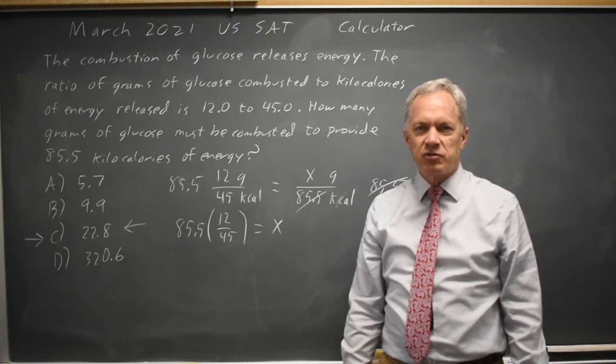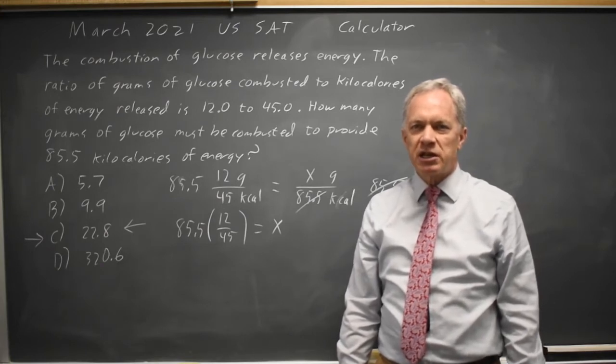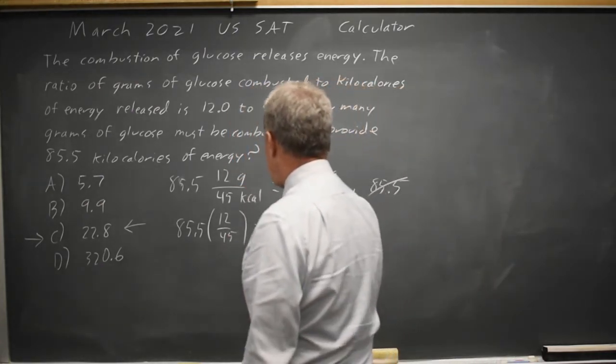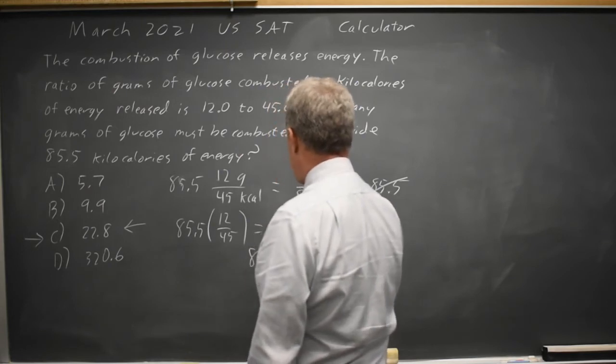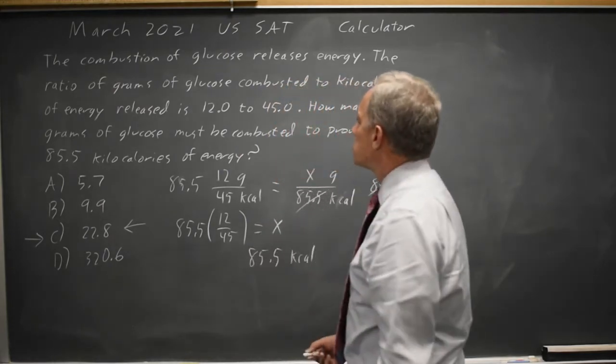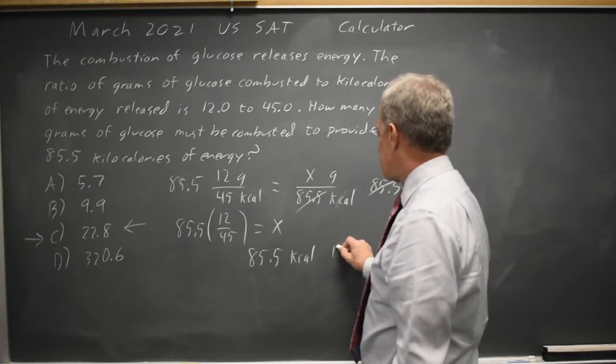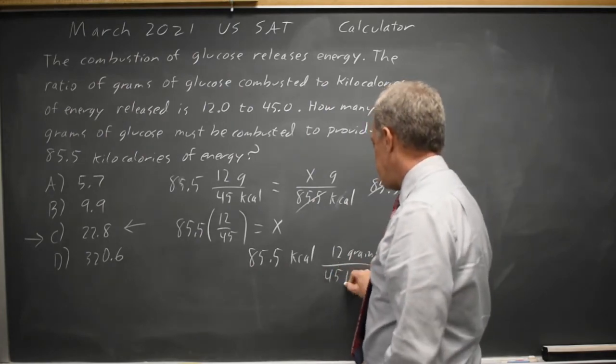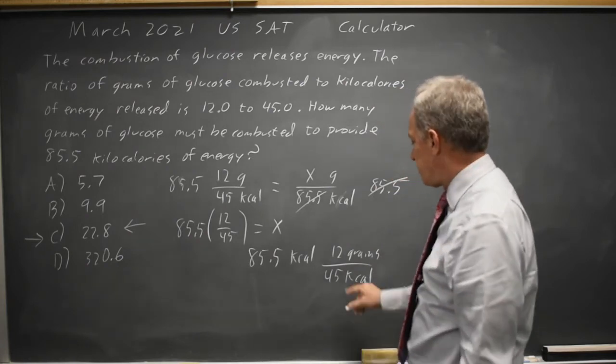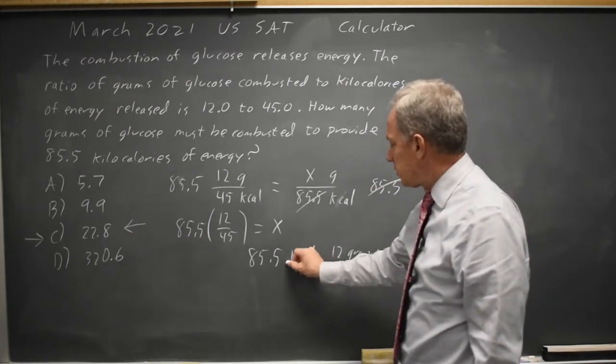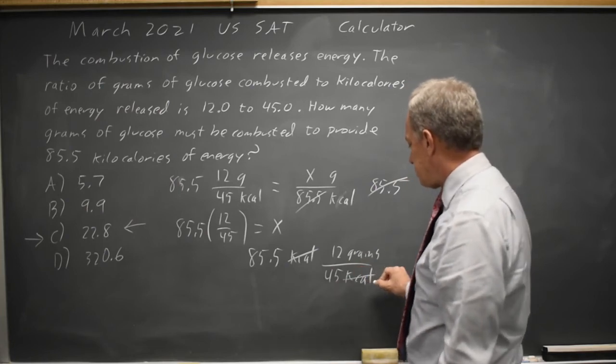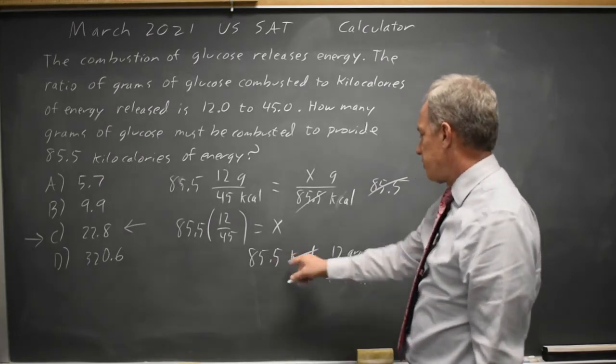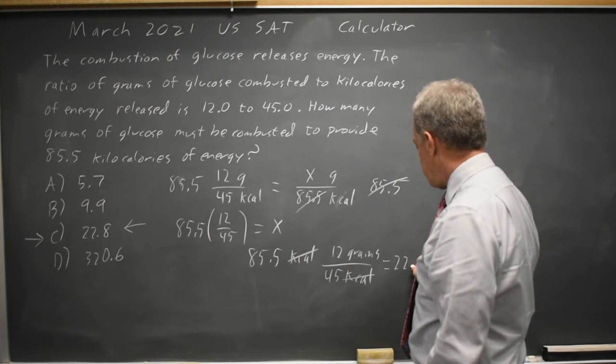The College Board often asks you to convert units, and we can either convert units by setting up a ratio like this, or we could have set it up as 85.5 kilocalories, and we're told that 12 grams corresponds to 45 kilocalories, and we set it up with 45 kilocalories in the denominator, so that kilocalories cancels kilocalories in the denominator to give us grams. And again, it's 85.5 times 12 over 45 is 22.8 grams.